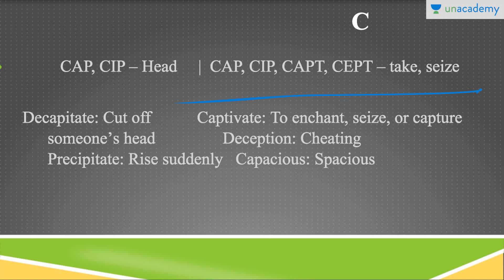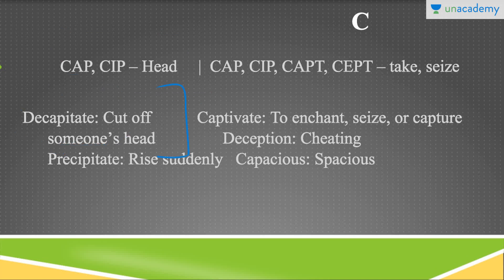Before wasting any more time, let me quickly move on to the next alphabet — that is C. I'm taking two roots here. C-A-P or C-I-P stands for head. For instance, decapitate, which means to cut off someone's head. Or precipitate, which means to rise suddenly. Precipitate also means precipitation outside — when we say it's raining, it's precipitating. I think that was a term we learned in geography while we were in school.